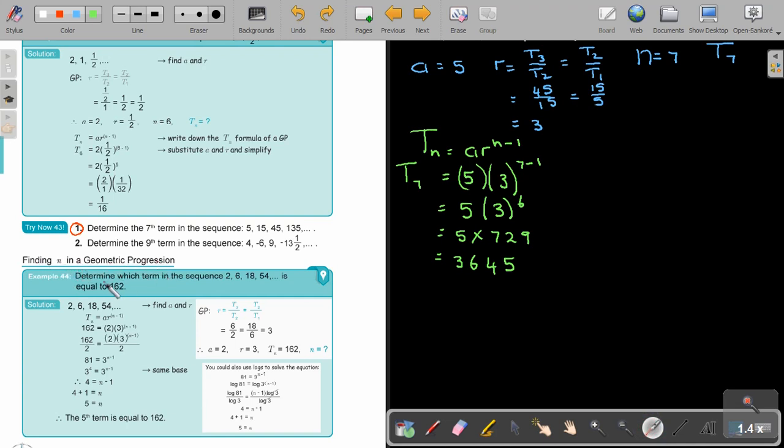Find n in a geometric progression. Determine which term in this sequence is equal to 162. In this case, I'm finding n, and I know that tn is 162, and I want to find that value of n. It's a GP, so r is 3, a is 2, tn is 162, and n is unknown. I do my substitution. You are working with indices, so you must first isolate that by dividing by 2 on both sides. You can either do it with logs or with indices. In this case, indices will work because I can make the bases the same. Then 4 equals n minus 1, so the value of n will be 5. The fifth term is equal to 162.